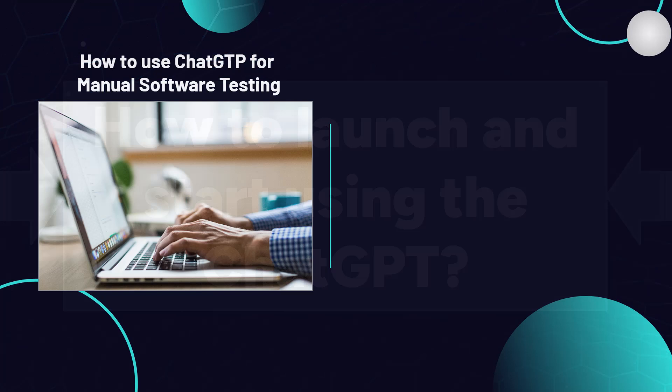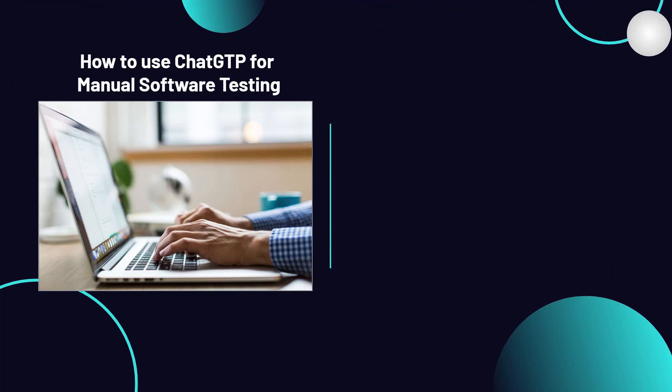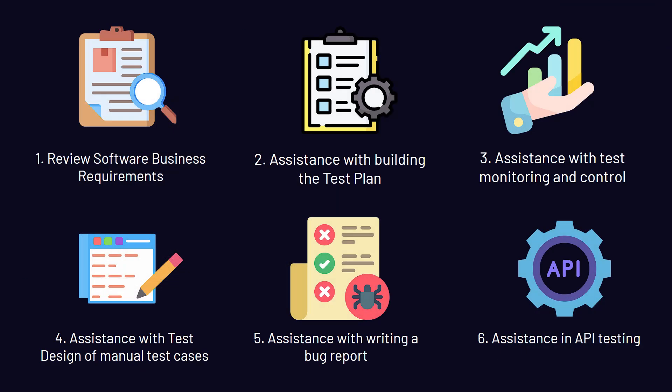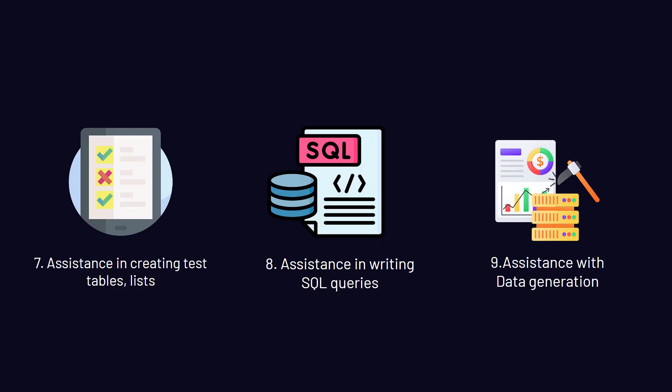Once you become familiar with the usage of the tool, we'll proceed to delve into how to use ChatGPT for manual software testing. In particular, we'll familiarize ourselves with such aspects as: reviewing software business requirements, assistance with building the test plan, assistance with test monitoring and control, assistance with test design of manual test cases, assistance with writing a bug report, assistance in API testing, assistance in creating test tables and lists, assistance in writing SQL queries, and assistance with data generation.